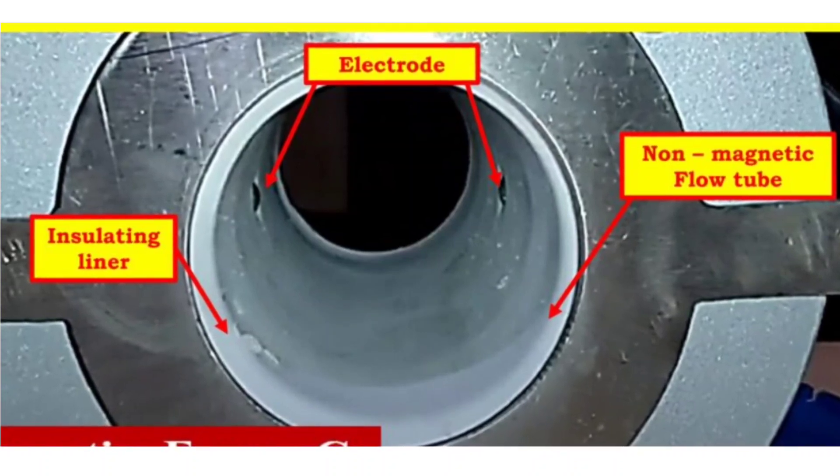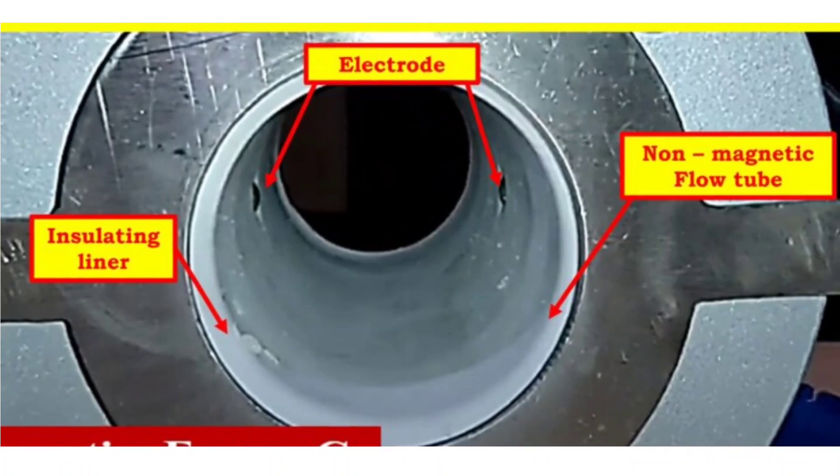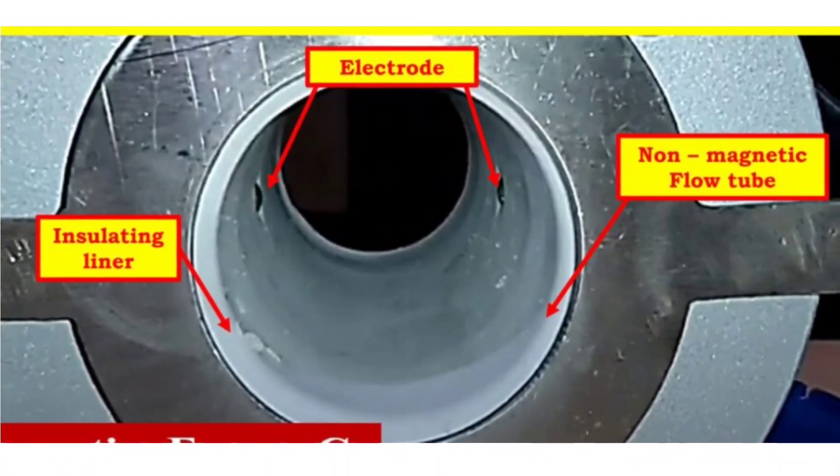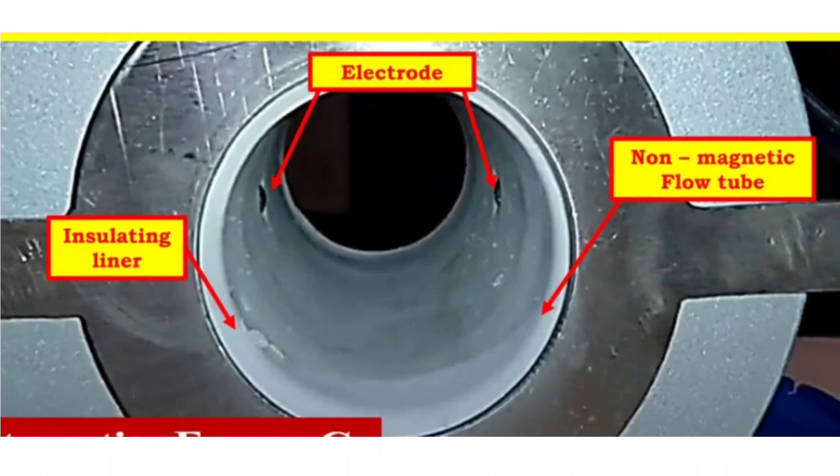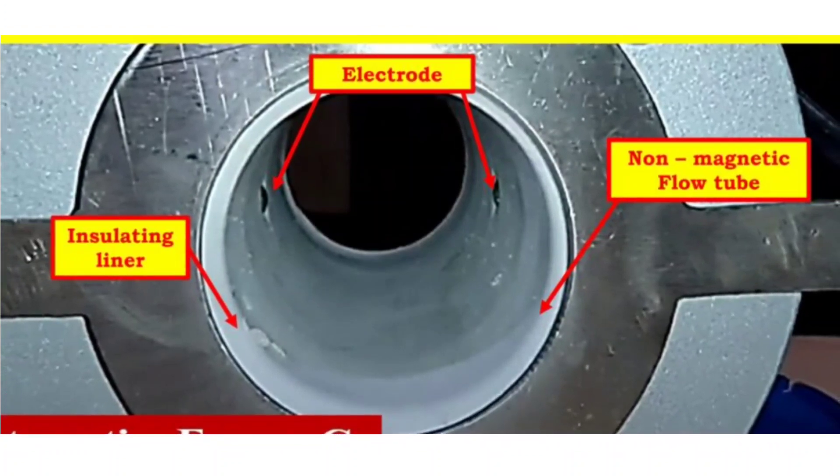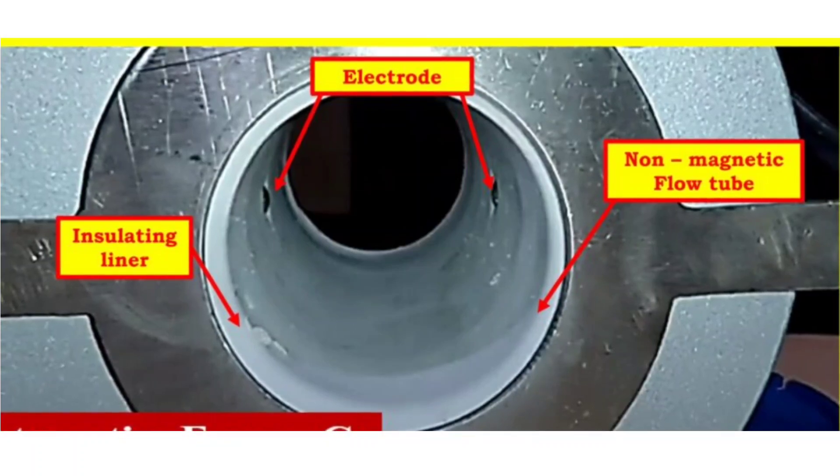Measure the resistance between the two electrode connections. The resistance reading should typically fall within the range of 3 to 50 kilo Ohms (3000 to 50,000 Ohms). If it's outside this range, it may indicate electrode contamination or coverage, which can affect the accuracy of the flow meter.